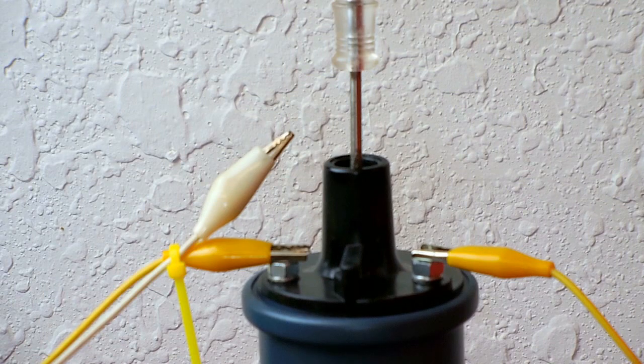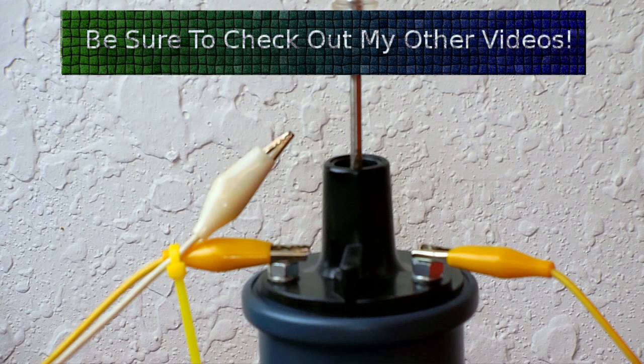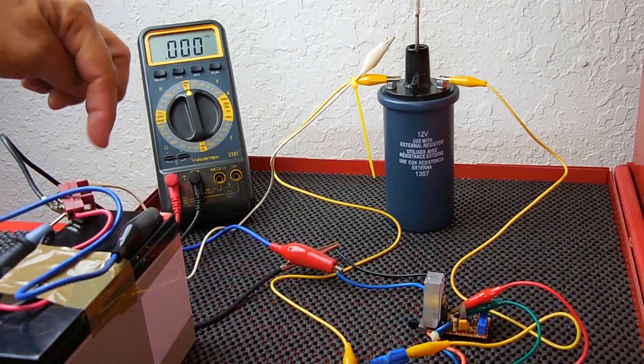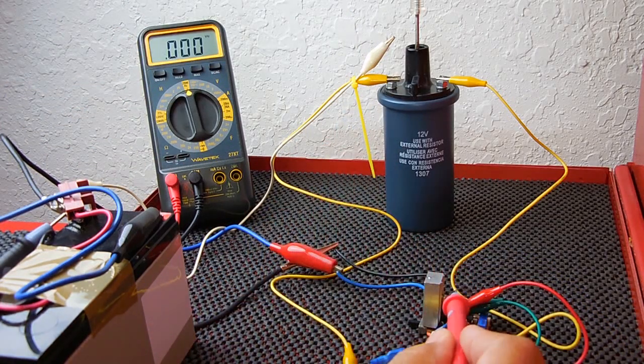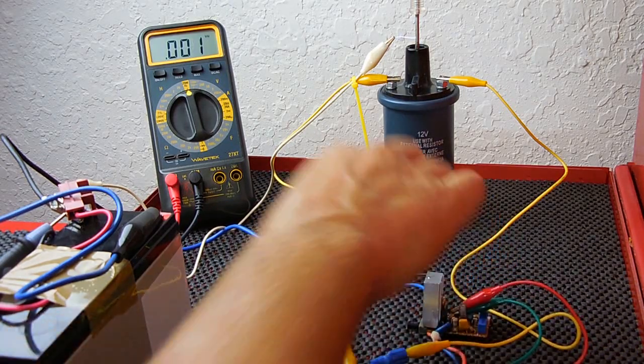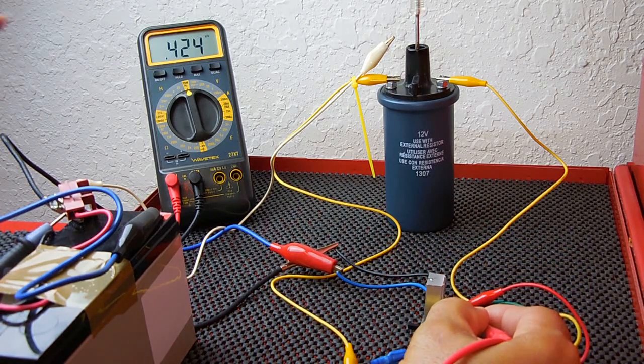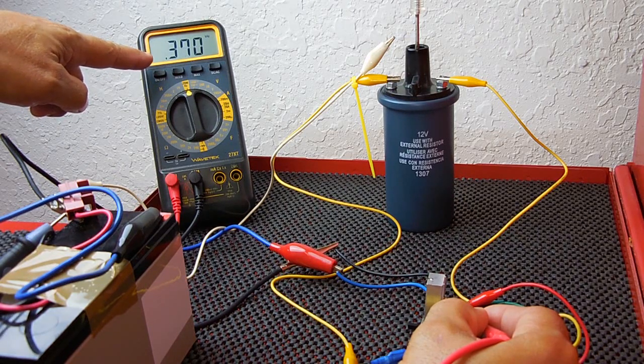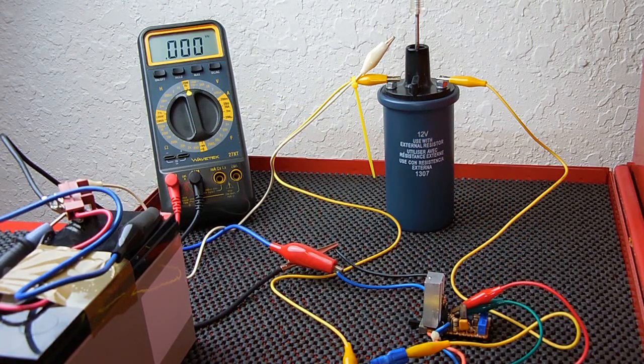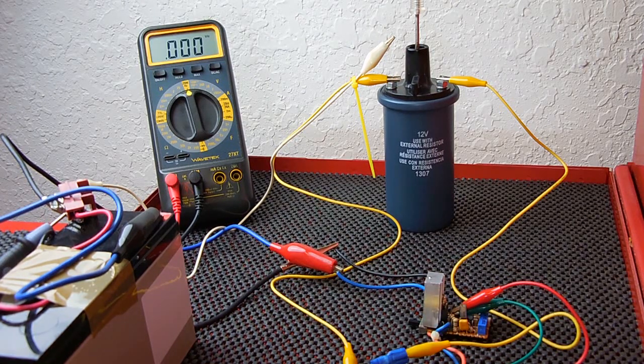I could smell ozone that was generated from the arcing. The next thing we're going to do is probe the resistor leading to the gate of the MOSFET and take a look at what the frequency is using the 104 cap. Common is connected to ground. The probe will be touched to the gate of the MOSFET. Here we go. And you can see it was right around 400 Hertz.